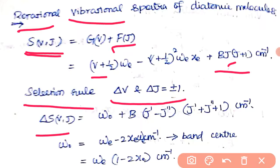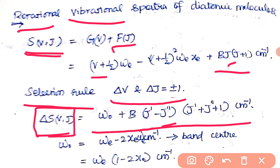In this notation, J prime represents the excited state and J double prime represents the ground state. So the ΔS equation is: excited level minus ground state level. We apply this to get the general equation: ΔS = ω₀ + B[J′(J′+1) − J″(J″+1)].